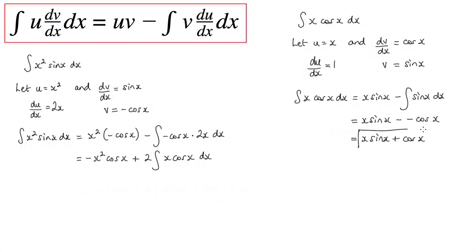So this here we can now substitute in over here, so what we'll end up with is minus x squared cos x plus 2 times x sin x plus cos x, close that bracket, plus c. We can simplify and rearrange to get 2x sin x plus 2 cos x minus x squared cos x plus c.